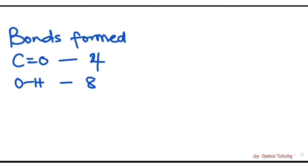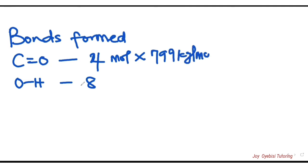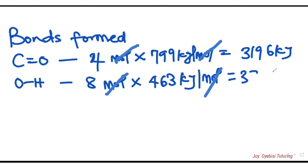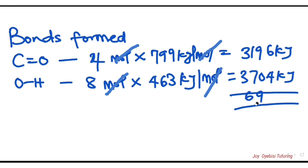For bonds formed: C=O has a bond enthalpy of 799 kJ/mol, so 4 × 799 = 3196 kJ. O–H is 463 kJ/mol, so 8 × 463 = 3704 kJ. Note that bond enthalpy values may differ slightly depending on your textbook or resources. Adding these gives 6900 kJ total for bonds formed.